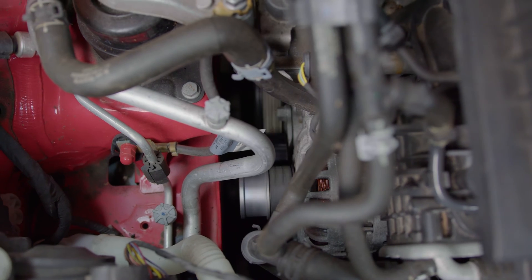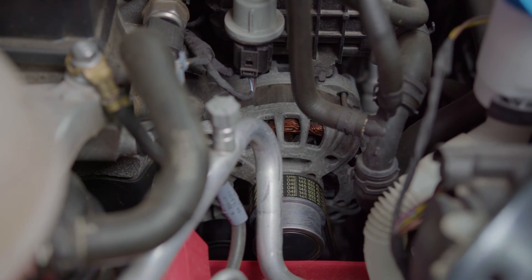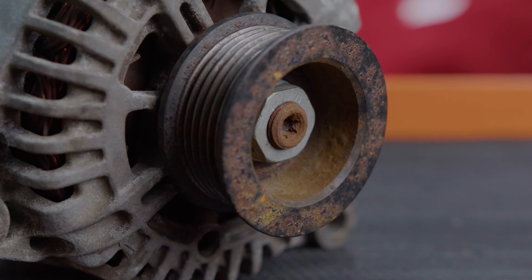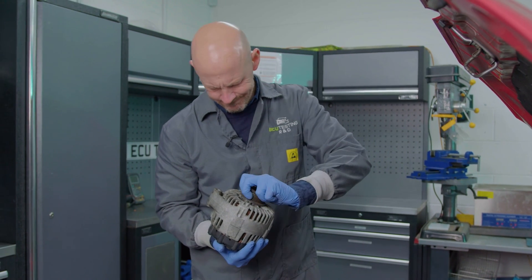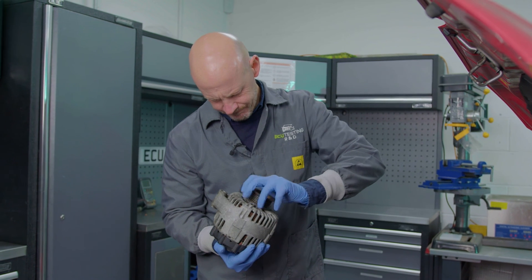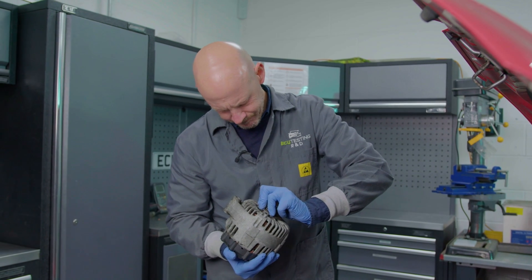If you notice the drive belt was slipping, vibrating harshly or not moving at all then check the alternator pulley. If it is fitted with an OAP it should only turn in one direction so if it is seized or free wheels in both directions it will need to be replaced.